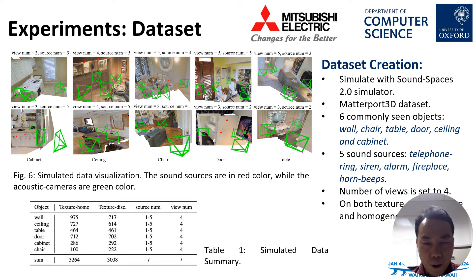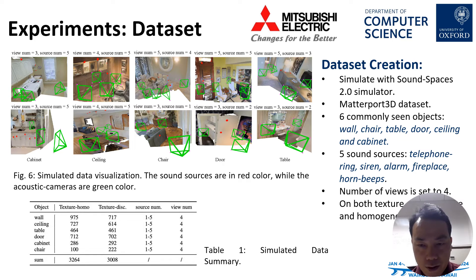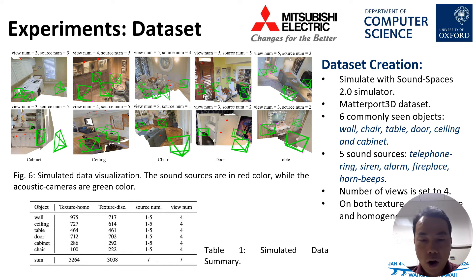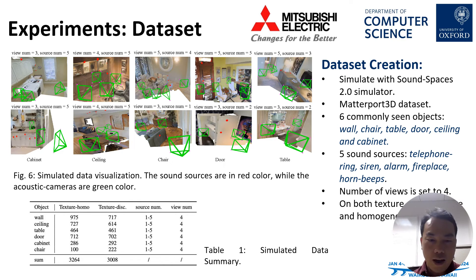For the experiments, we chose to simulate the dataset using SoundSpaces version 2 simulator, based on the Matterport 3D environment. We chose six common scene objects: wall, chair, table, door, ceiling, and cabinet. We have five sound sources including telephone rings, siren alarm, and fireplace. The view number is four, and we created two sub-datasets: texture-homogeneous and texture-discriminative. Table 1 summarizes the dataset information.